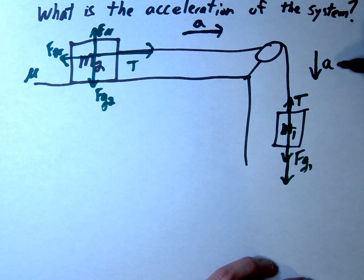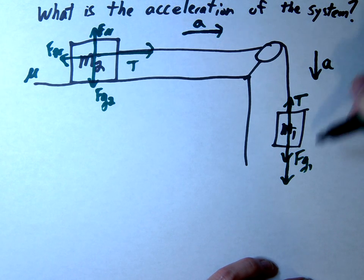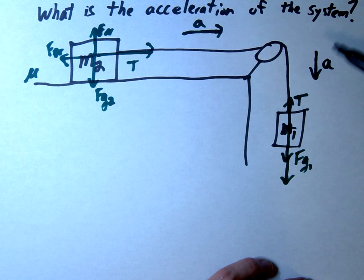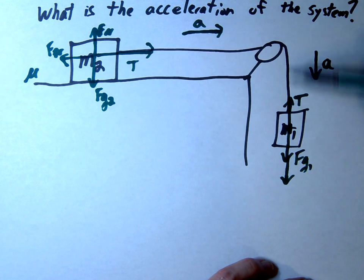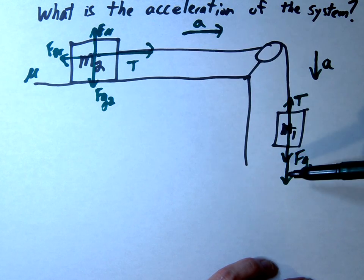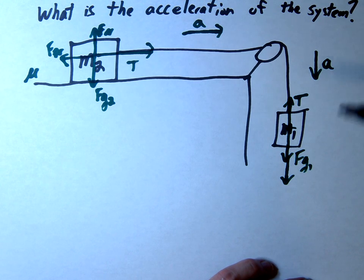For the hanging mass, we'll define downward acceleration as positive. This is different from typical conventions where up is positive, but we want both masses to have the same positive acceleration in their direction of motion.